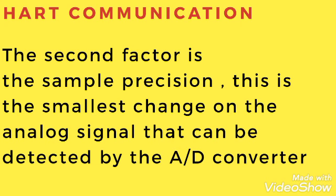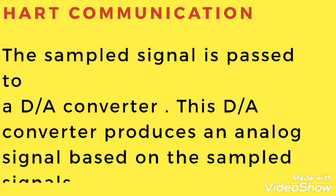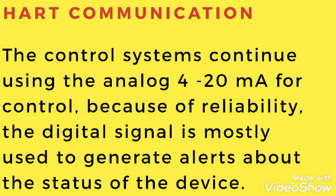The digital signal is passed to a signal processor to get a more accurate value. The signal processor also generates the HART digital signal that overlies the analog output. The sampled signal is then passed to a digital-to-analog converter, which produces an analog signal based on the sampled data. The control system continues using the analog 4-20mA for control because of its reliability.